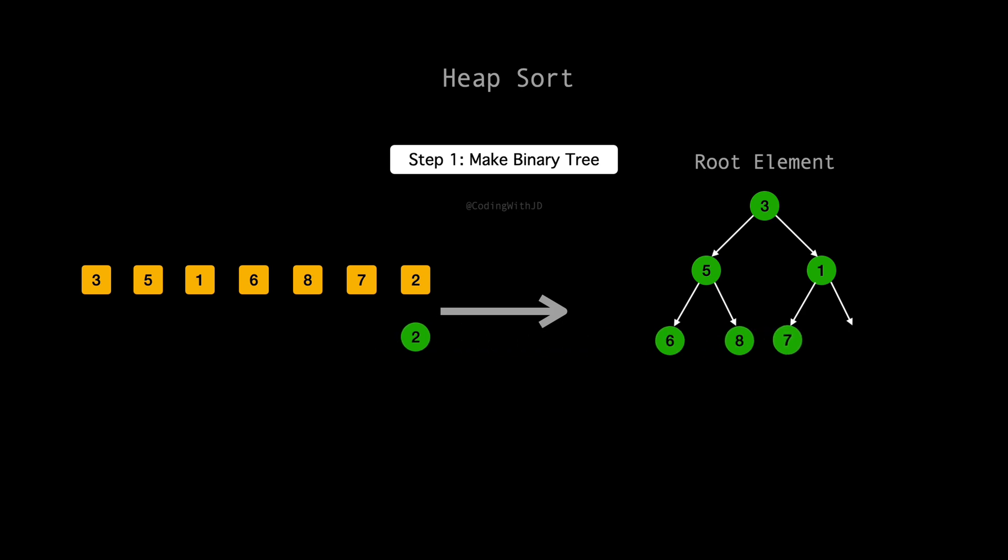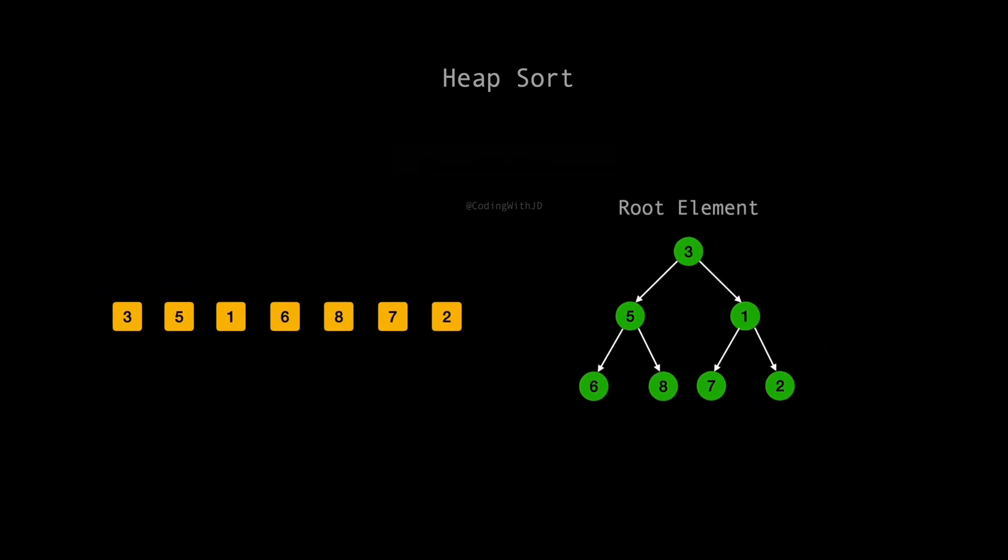Next, 7 joins in under 1, taking the left slot there. And finally, 2 fills the last spot as the right child under 1. And there you have it. Our array is now a binary tree, each parent nicely having no more than two kids. This setup is the first step before we turn it into a heap.